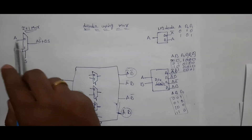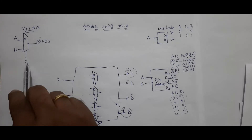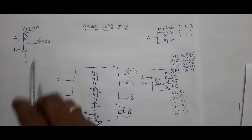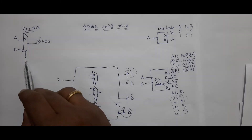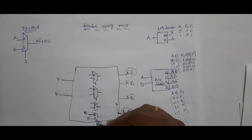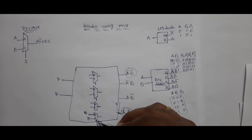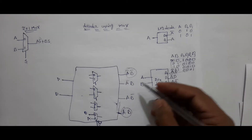If I give A and B here, A B will come into picture. That's why this input I connected B, this input connected A — that is also correct. Here B, here A — both ways are correct.